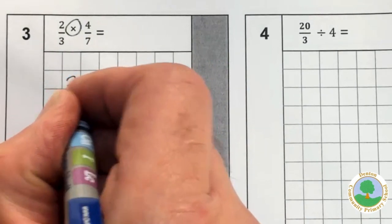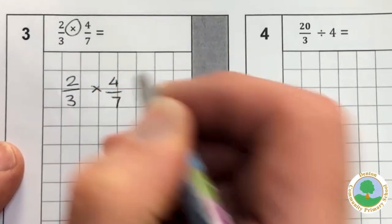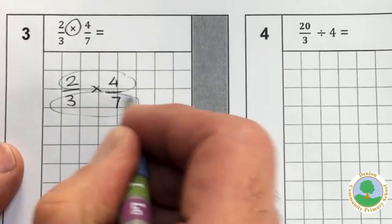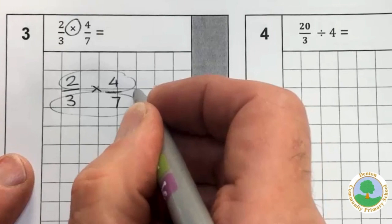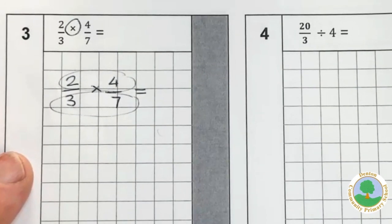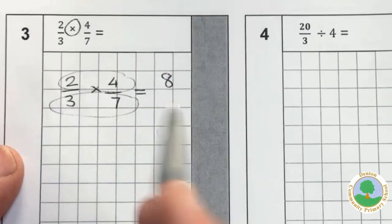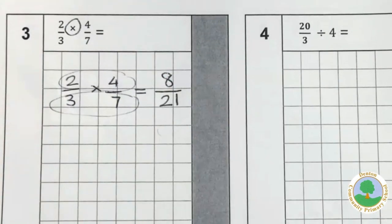And the rule for multiplication could not be simpler. You simply multiply the numerators together and you multiply the denominators together. There's very little to remember. So the numerators, two multiplied by four is eight. The denominators, three multiplied by seven is twenty-one.